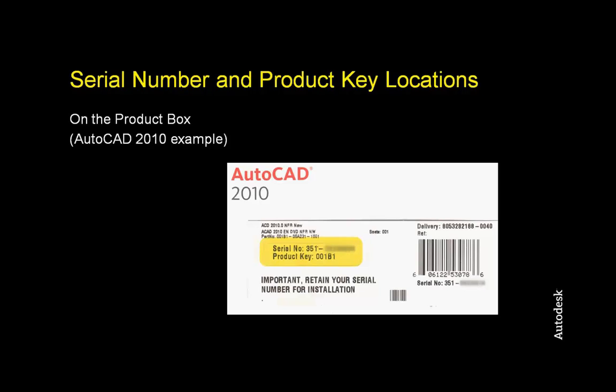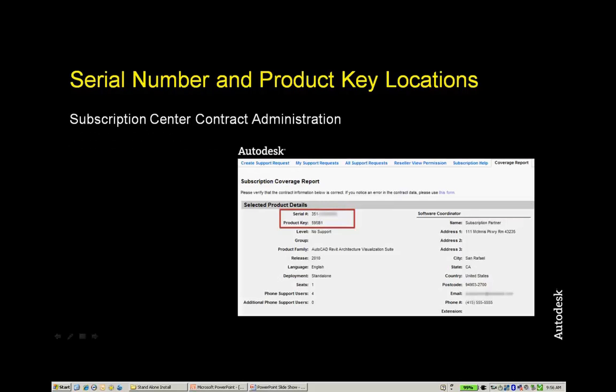When the box is shipped to you, you will find the product key and serial number located on the plastic jacket that contains the software, or on a sticker on the cardboard box it's shipped in. Another area where you could obtain the serial number and product key would be to log on to the Subscription Center as your contract administrator, where you can select the product details.